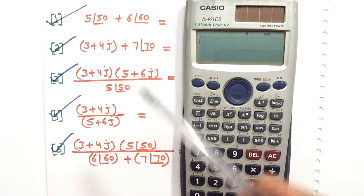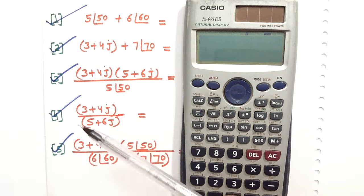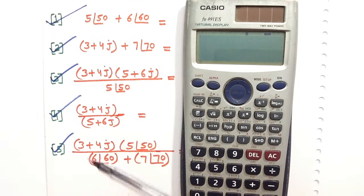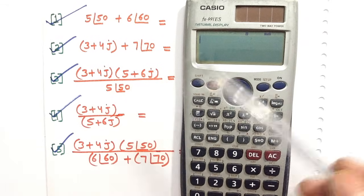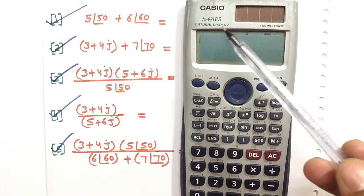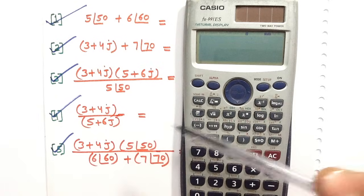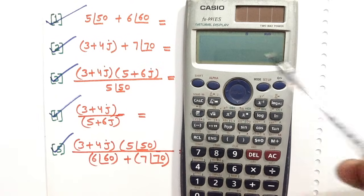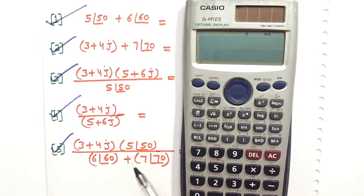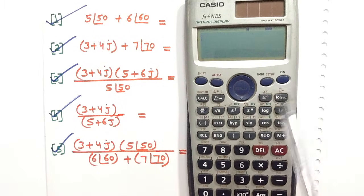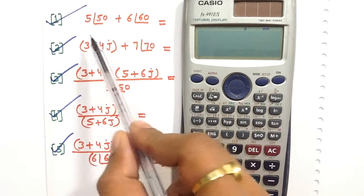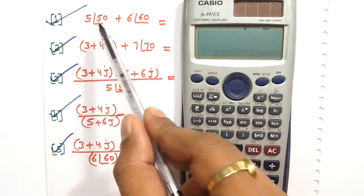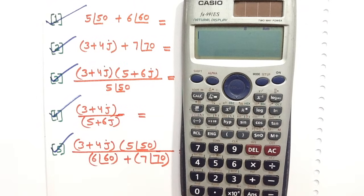In electrical engineering, these types of problems are very important and we can easily solve them by using the Casio FX991ES. I am going to solve five problems. The first problem is 5 angle 50 plus 6 angle 60.